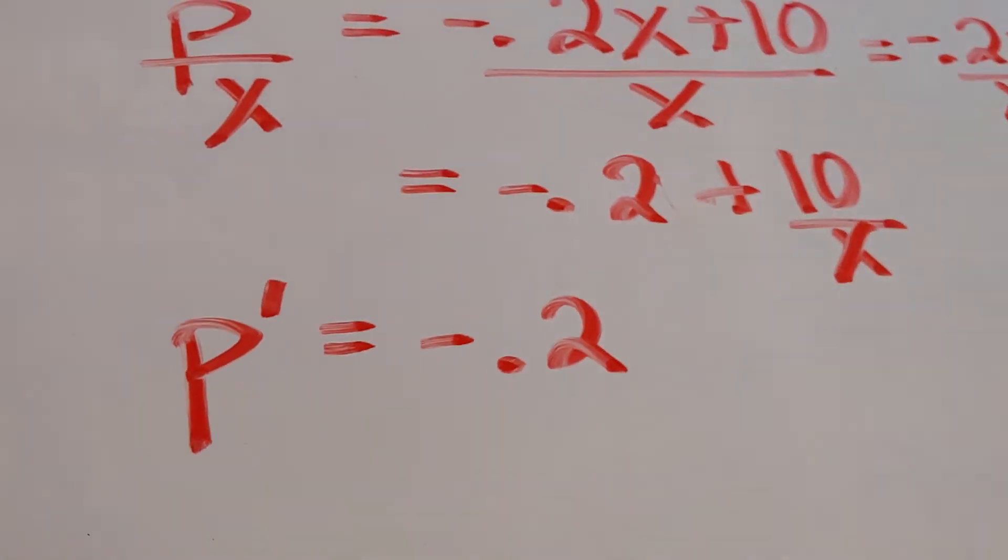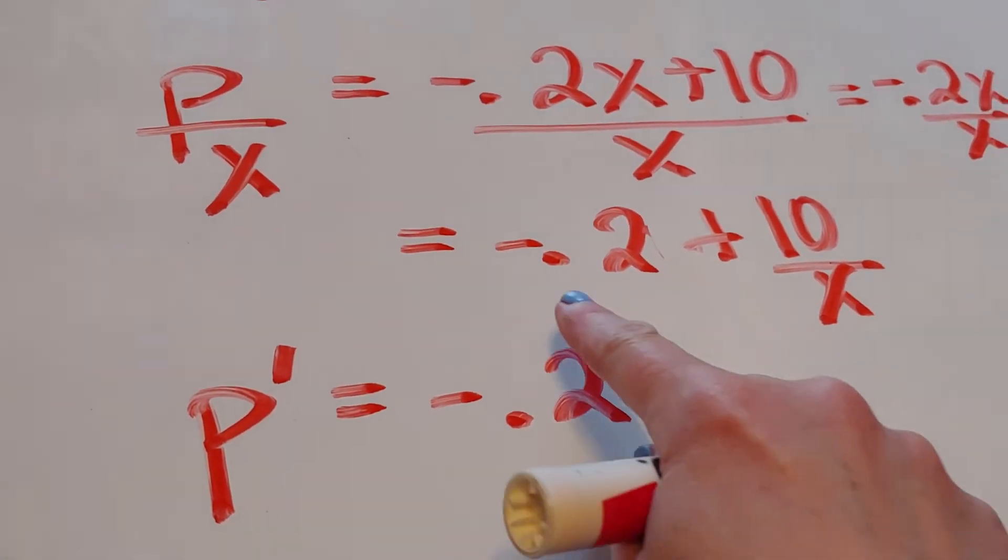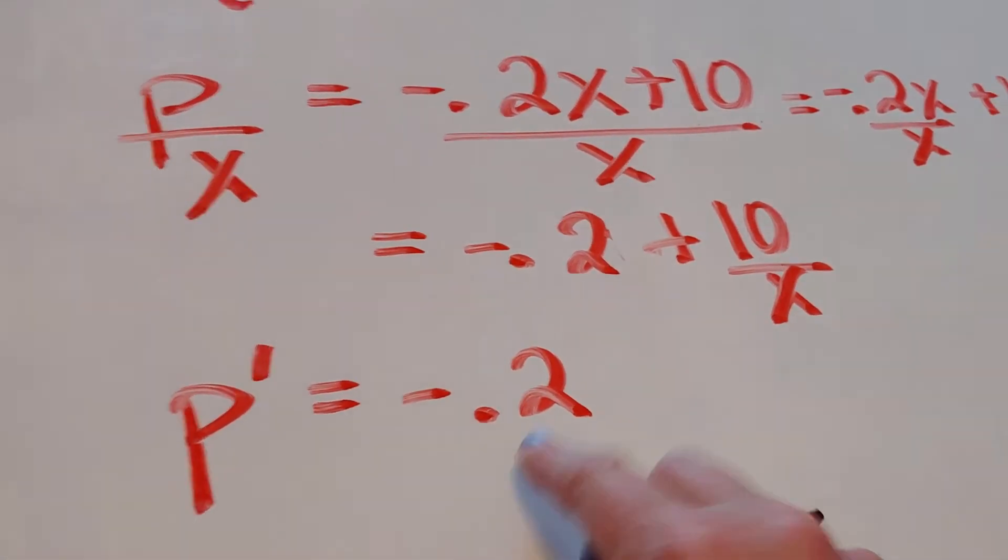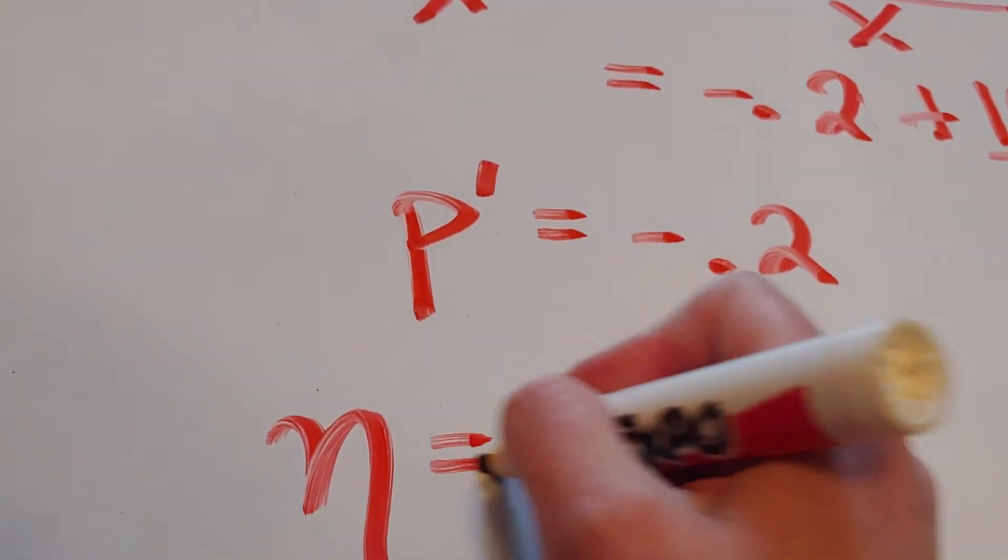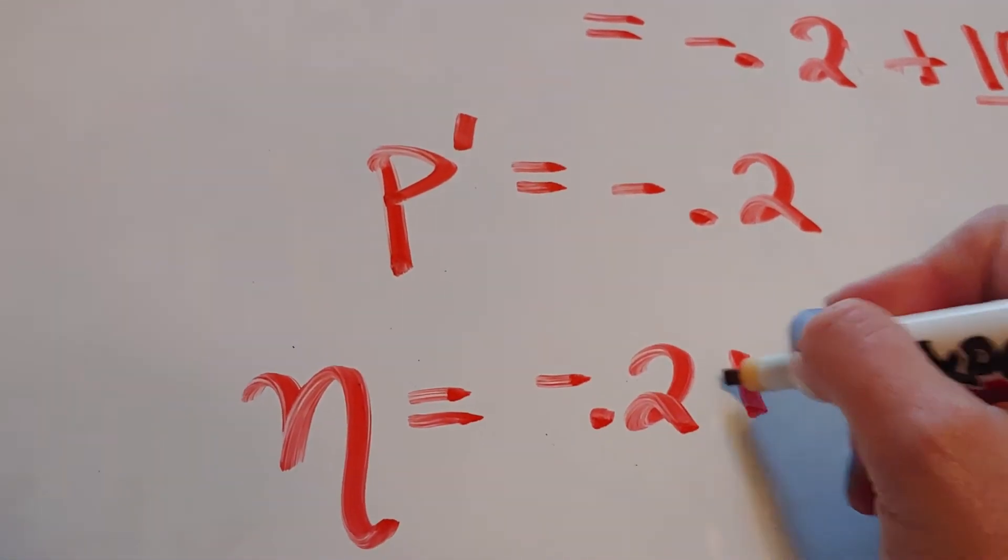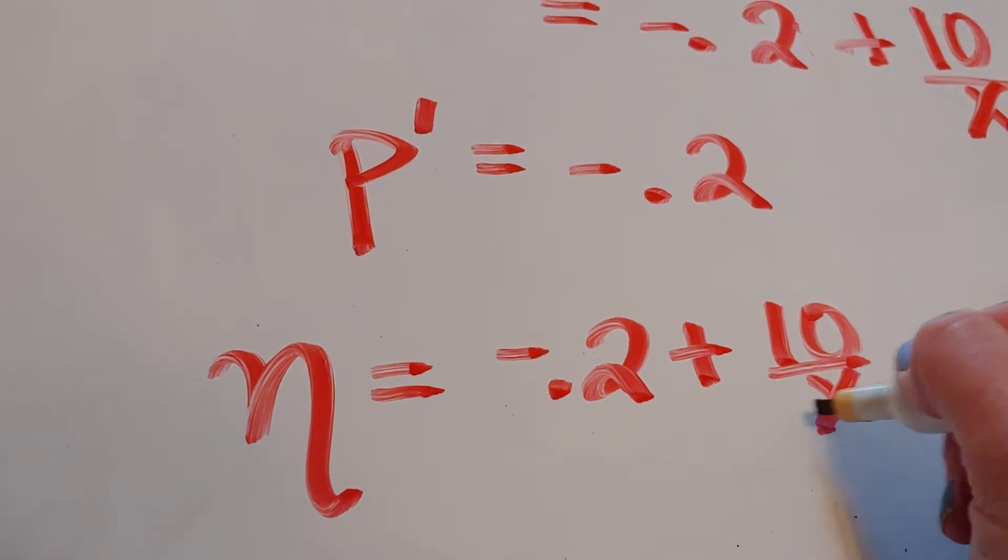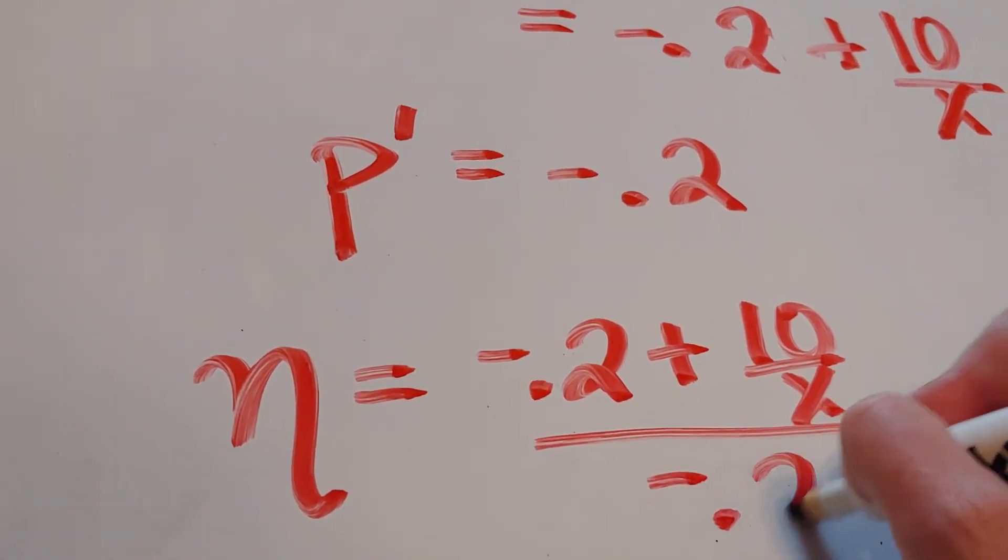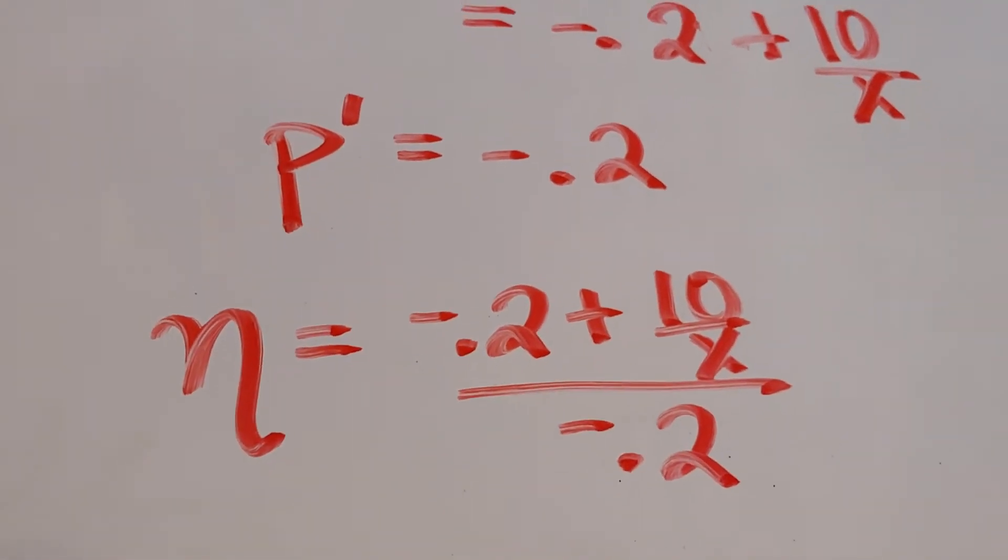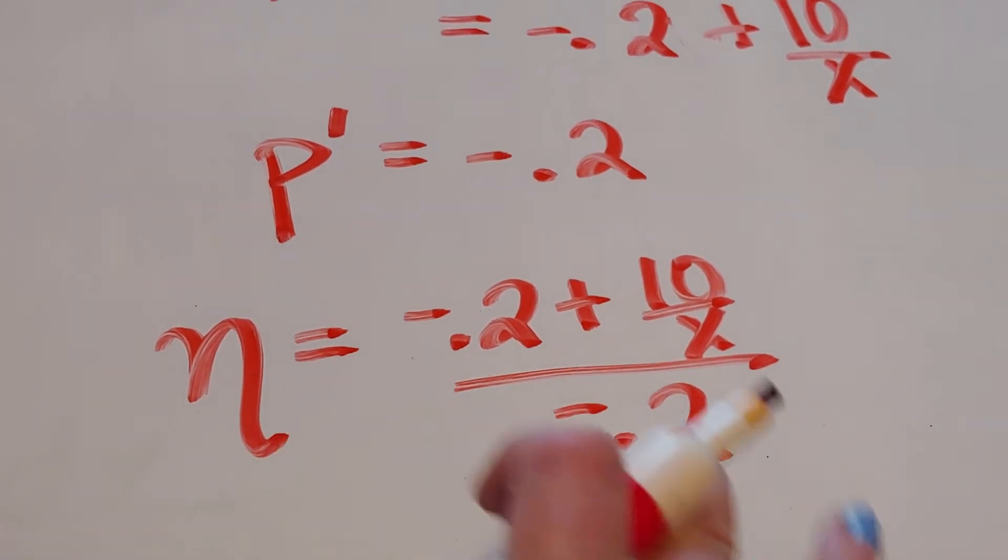Now we're going to put it all together. And putting it all together means I'm going to take this piece and divide it by this piece. So nu is negative 0.2 plus 10 over x divided by negative 0.2. So what I have is I've built my function.